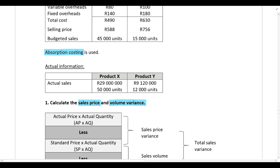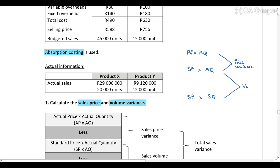In part one we are going to calculate the sales price and volume variances. Follow a logical approach: always start with the actual information — the actual price multiplied by the actual quantity. Then change one thing at a time. Change the price and keep the quantity the same; that gives the sales price variance. Then keep the price the same and change the quantity; that gives the volume variance. When calculating the price variance, always use selling prices.